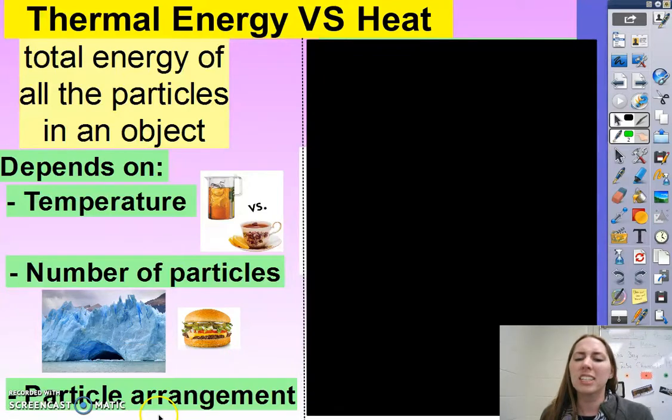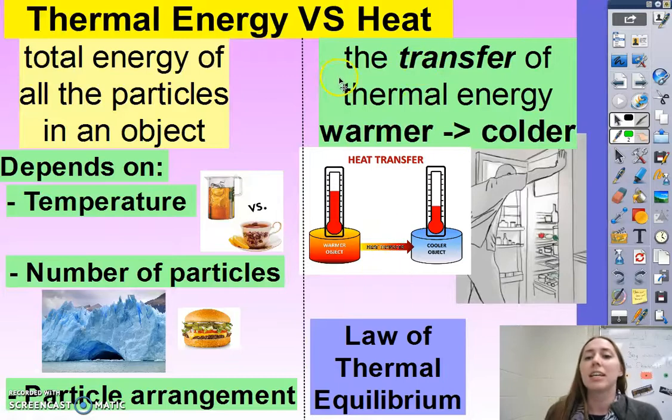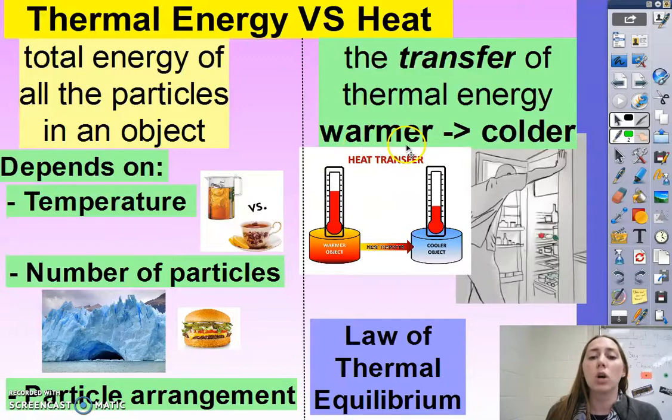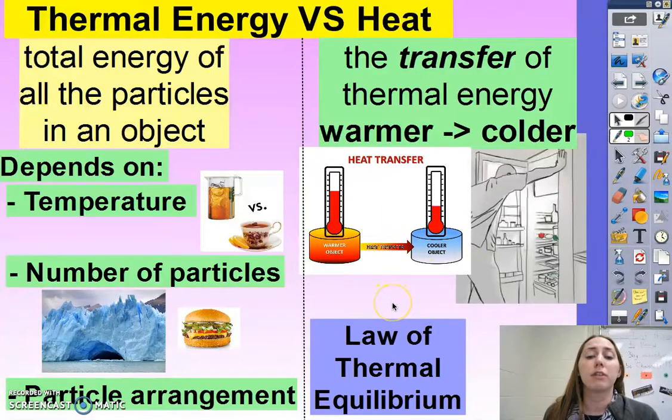And then lastly, and we're not going to discuss this much in this class, but you do need to be aware of it, is particle arrangement can affect thermal energy as well. So on to heat. Heat is the transfer of thermal energy, and heat always goes from something warmer to something colder. And this is the law of thermal equilibrium. Basically, things will move from warmer objects to cold objects, and back and forth until they reach the same temperature.